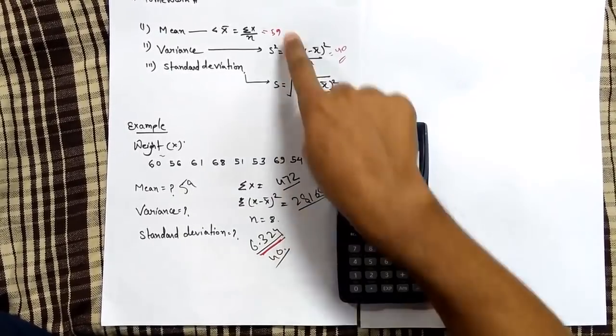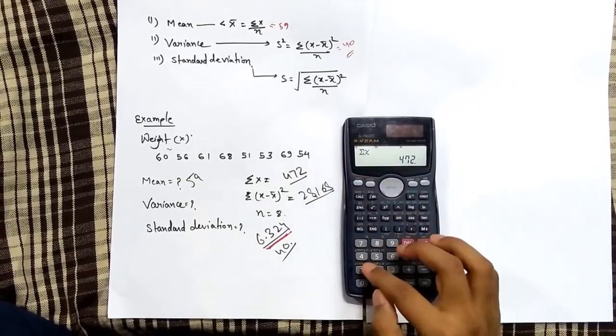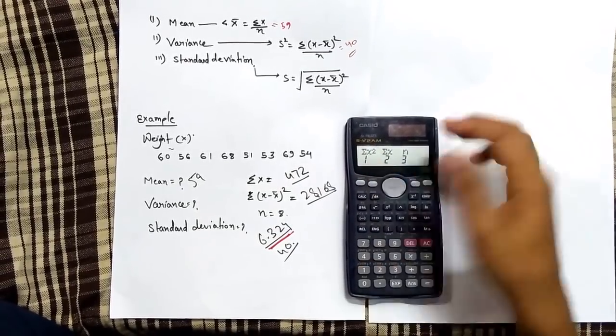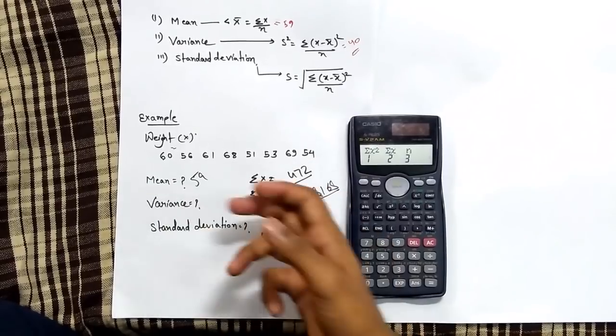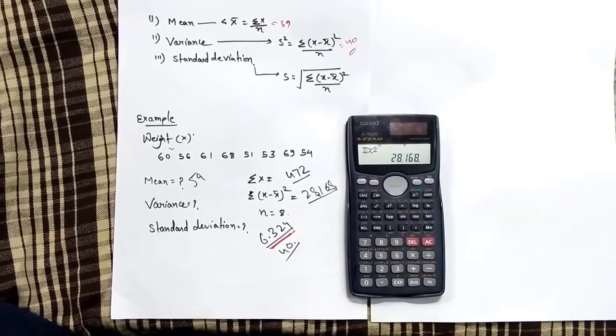Again we'll calculate X square. Press 1, then after squaring and then sum up you will get this value. Press 1, this value. So you can see these things also and you can compute a result also.